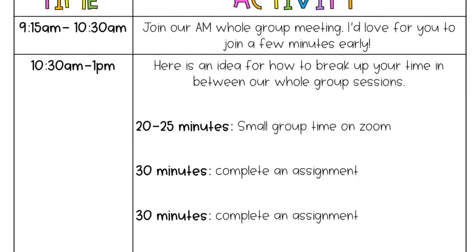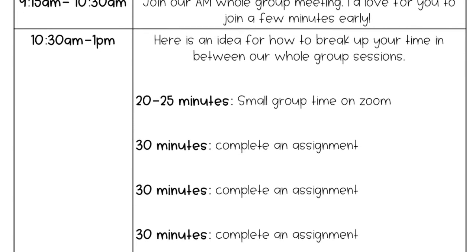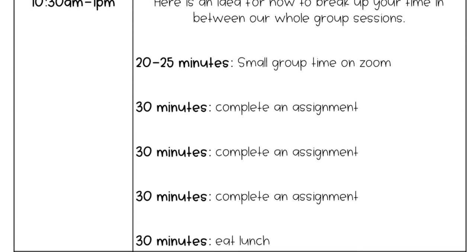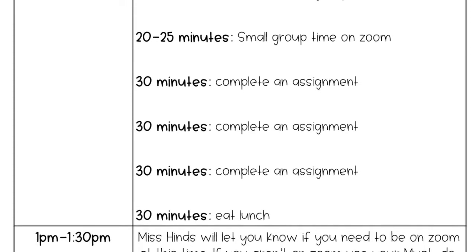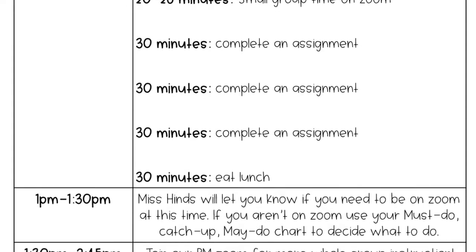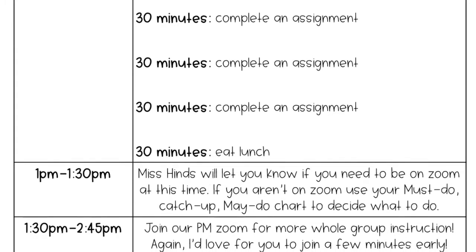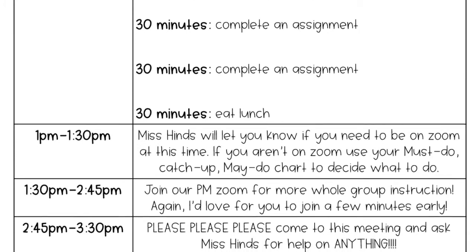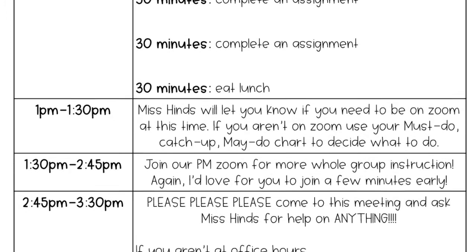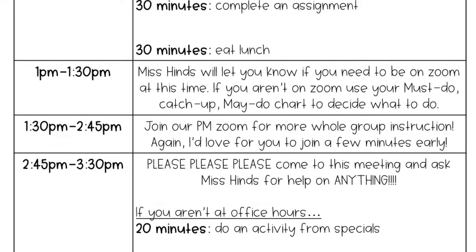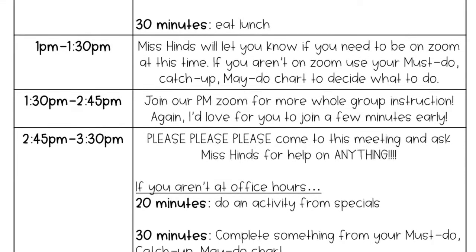First up we have a sample student schedule. You can see on the left column here I have listed the times throughout the day that your student will be working on things. The right column includes all of the activities that your student could be working on throughout the course of the day. Olathe administration has set forth the expectation that online students will be getting 360 minutes of instructional time each day, and as long as your student is sticking to this schedule they will be getting just that. I will also link it below in the description box so if you would like to screenshot it or save it, you can do so.